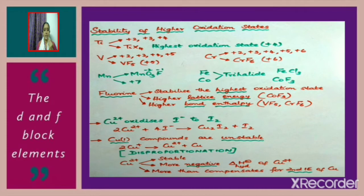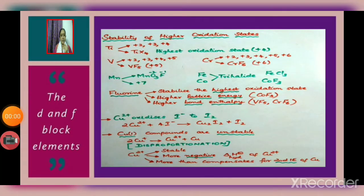Cu²⁺ oxidizes I⁻ (iodide). The reaction can be written as: 2Cu²⁺ + 4I⁻ → Cu₂I₂ + I₂. Another important point: copper(I) compounds are unstable and undergo disproportionation. The equation is: 2Cu⁺ → Cu²⁺ + Cu, where the oxidation number of copper both increases from +1 to +2 and decreases from +1 to 0.